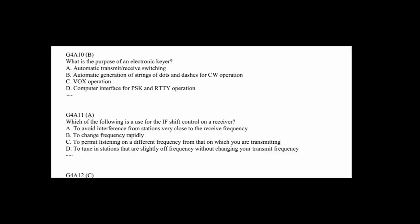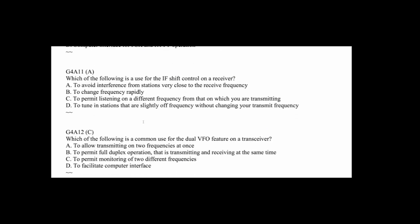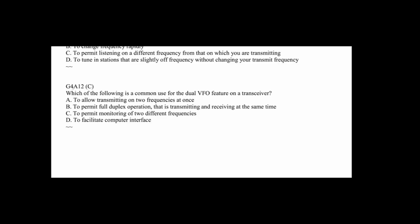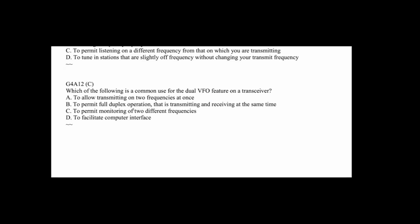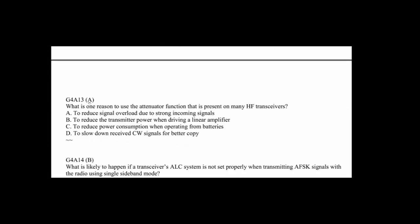What that's saying is some transceivers have delay before the signal actually leaves the box, and that delay is to allow another box like a linear amplifier to complete the sometimes mechanical relay that has to change position to connect the antenna, so it's slower to change from transmit to receive to transmit than the transceiver, so the transceiver has to compensate by slowing the time down that it puts out a signal. G4A10: What is the purpose of an electronic keyer? That's pretty easy, that's the automatic generation of dots and dashes for CW operation. G4A11: Which of the following is a use for the IF shift control on a receiver? Very handy device, and that's to avoid interference from stations that are very close in frequency. You can shift the IF and move the receiver just slightly away from somebody who might be above or below your receive frequency.